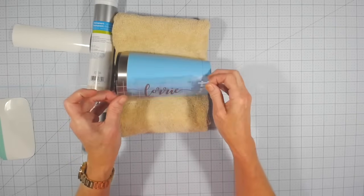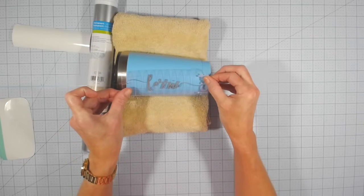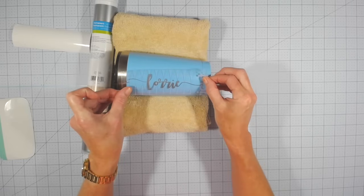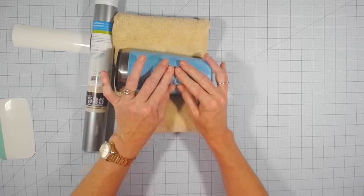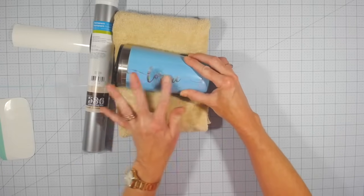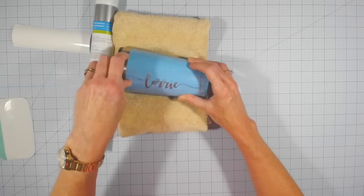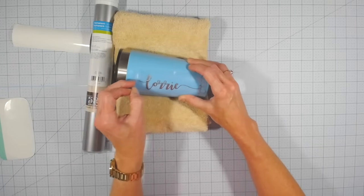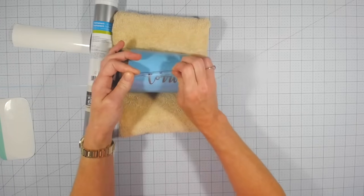Now you're going to apply the transfer right on your cup. Now I did wipe the cup down with rubbing alcohol before I applied anything and that just removes any oils from your hands or fingers or any sticker residue that's left on your tumblers.